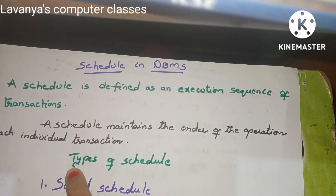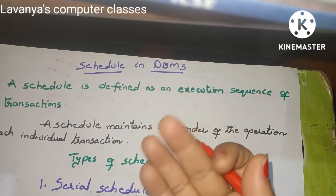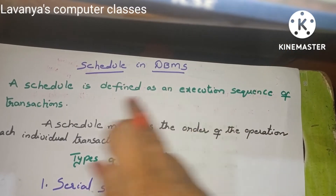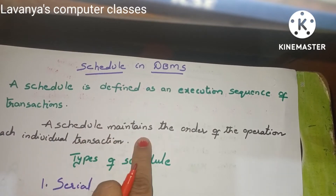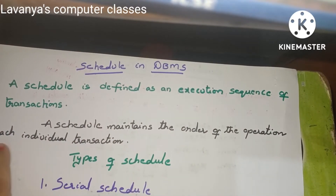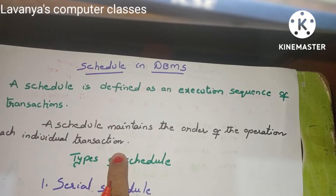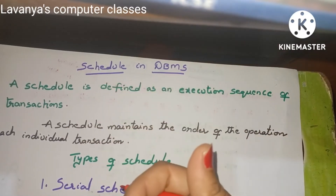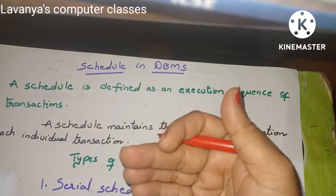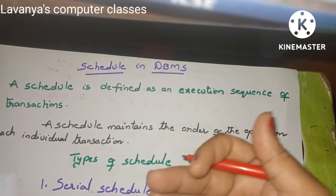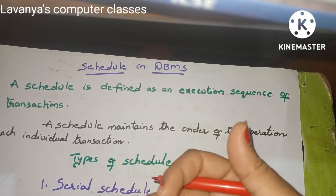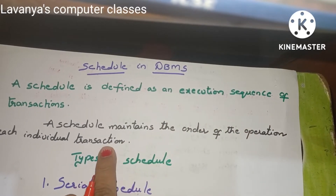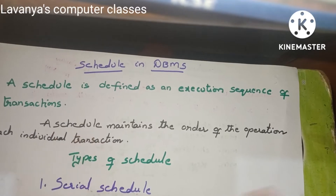Which action is first, then which action is coming next — we frame the transaction step by step, and that sequence is known as a schedule. A schedule maintains the order of operations in each individual transaction: which operation is executed first, then the next operation, for each and every transaction.